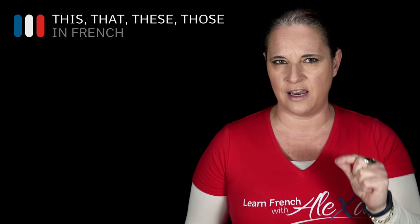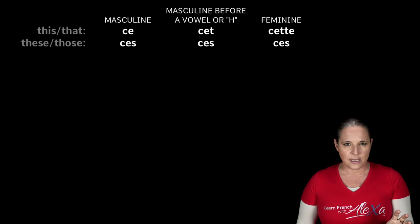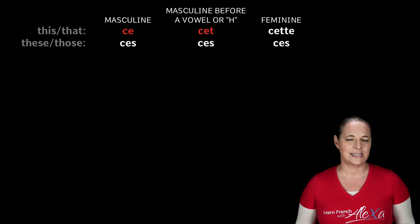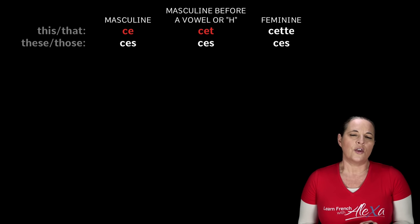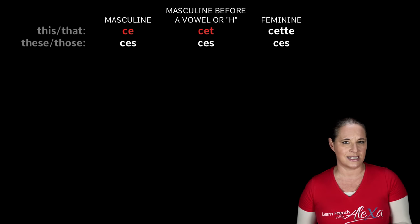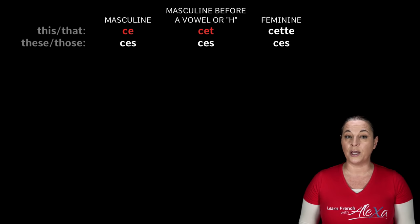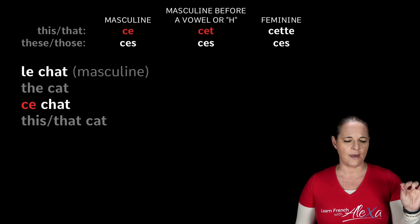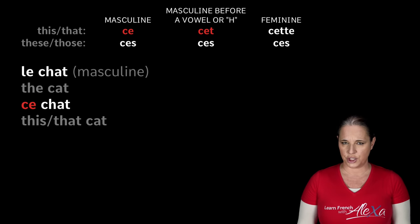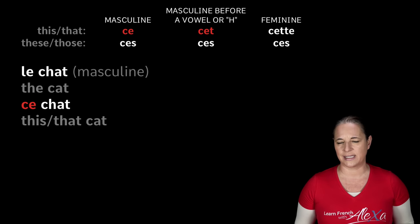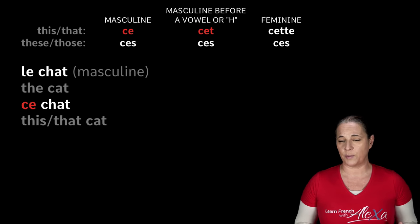This, when using a masculine word, is ce, C-E, or cet, C-E-T. You use ce when a word is masculine and does not have a vowel or an H. But you would use cet, C-E-T, when the word is masculine but begins with an H or a vowel. For example, this cat: ce chat, because chat is masculine and doesn't begin with a vowel or an H.